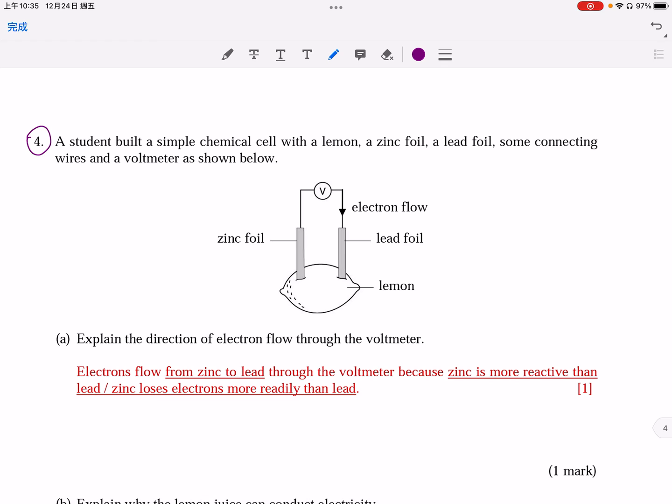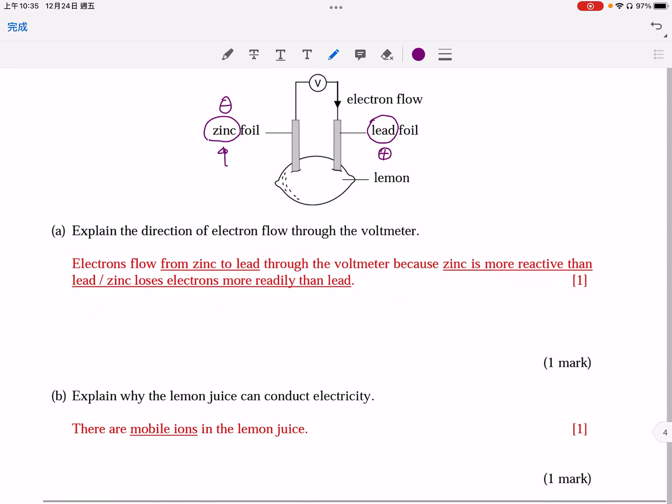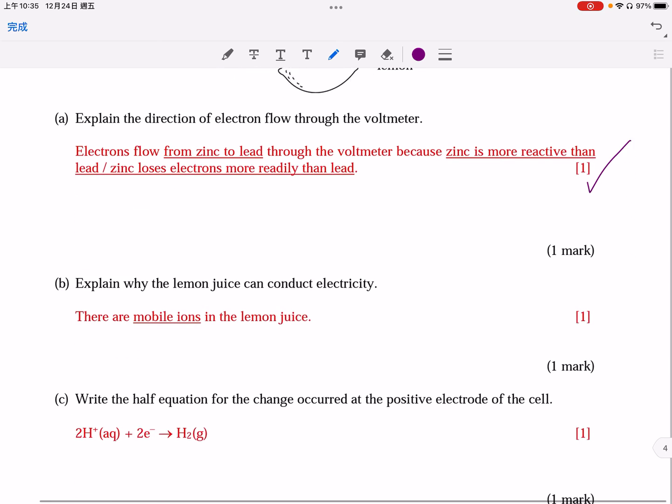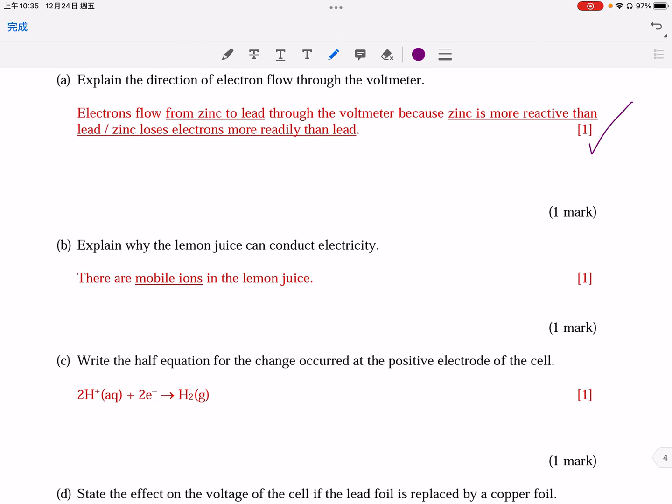Finally, the question number 4. This is a simple chemical cell consisting of two different metals. Of course, zinc is more reactive. So, it will be the negative electrode. Lead is the positive electrode. Direction of electron flow. This is very straightforward. I think no need to discuss it further.